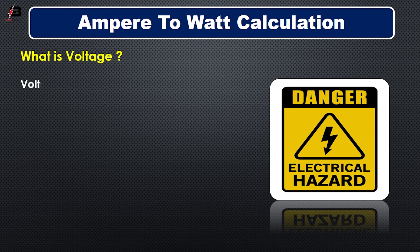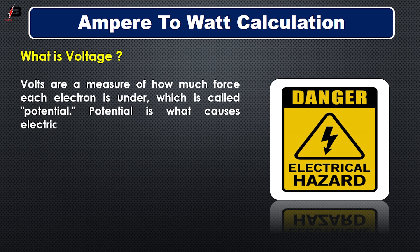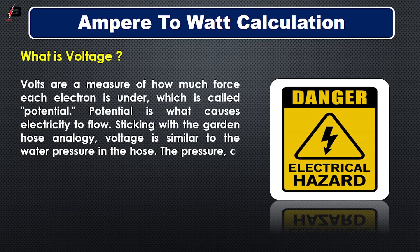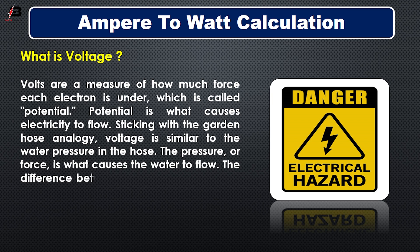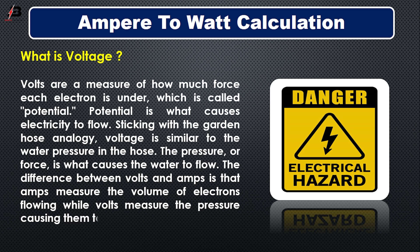What is voltage? Voltage is a measure of how much force each electron is under, which is called potential. Potential is what causes electricity to flow. Sticking with the garden hose analogy, voltage is similar to the water pressure in the hose — the pressure or force is what causes the water to flow. The difference between voltage and ampere is that ampere measures the volume of electrons flowing, while volts measure the pressure causing them to flow.